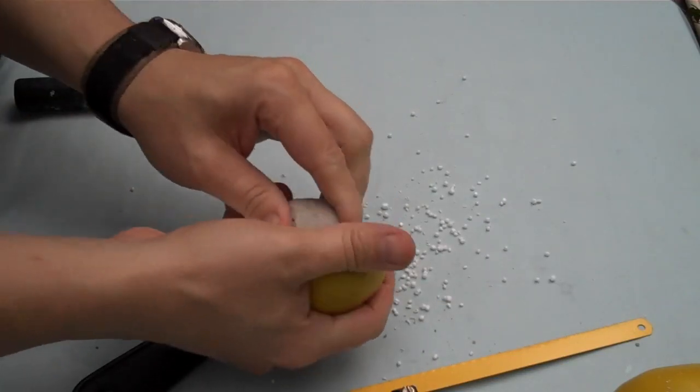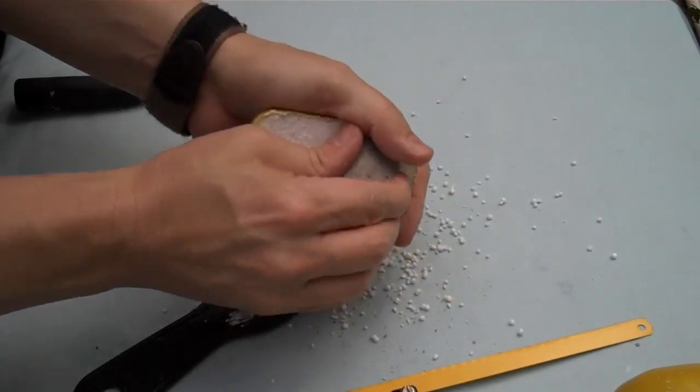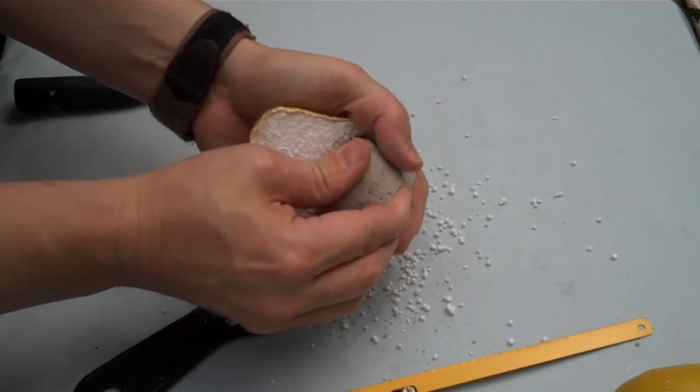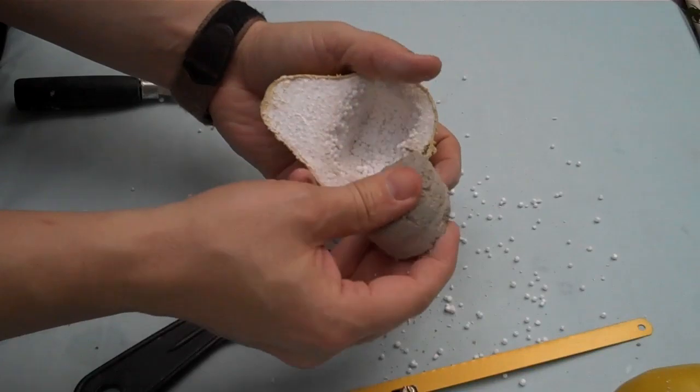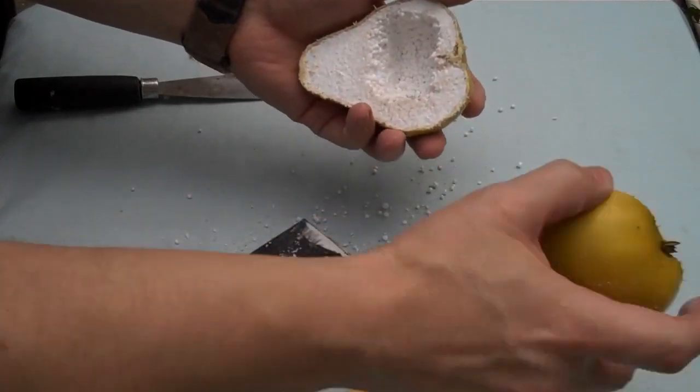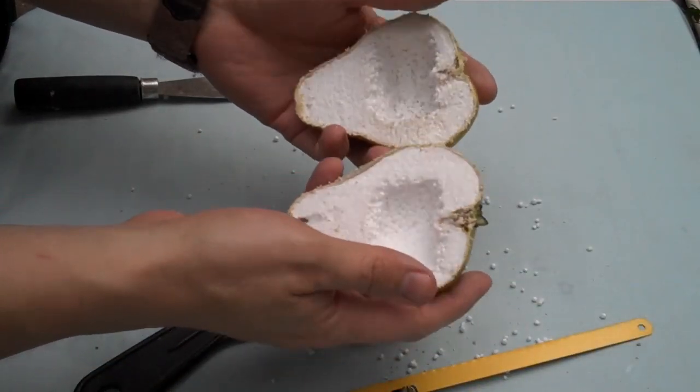So I'm going to remove that. And you can see that's firmly in there. Now that's out, so now I've got my two pair halves that I'm going to use.